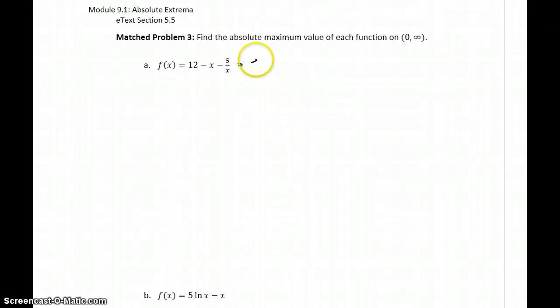The first thing we can do is rewrite our function as 12 minus x minus 5x to the negative 1, which will make it easier to find the first derivative, which will be negative 1 plus 5x to the negative 2nd.